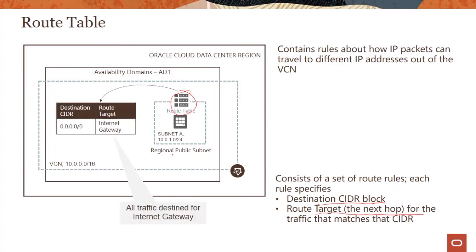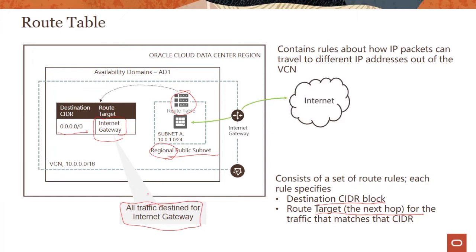If you look at this particular subnet, it's a public subnet — it can be regional or AD-specific. In this case I'm using a regional public subnet. In the route table there is an entry which says 0.0.0.0/0, meaning any IP address. So packets destined for any IP address need to go to the internet gateway, which is what is being shown here — all traffic destined for the internet gateway.